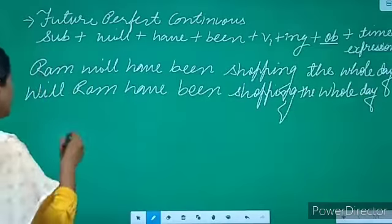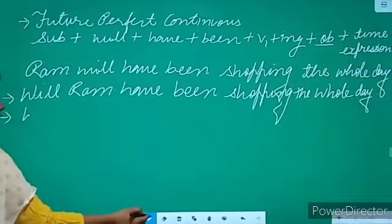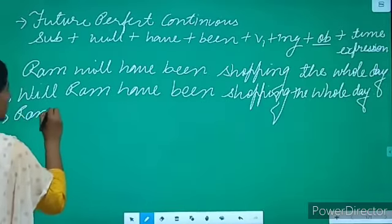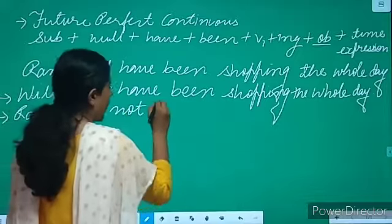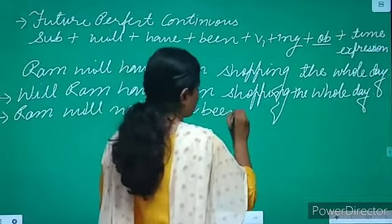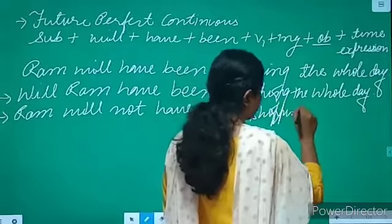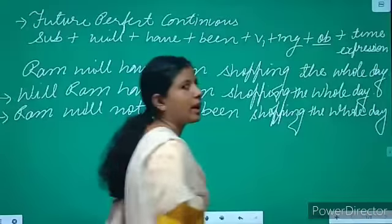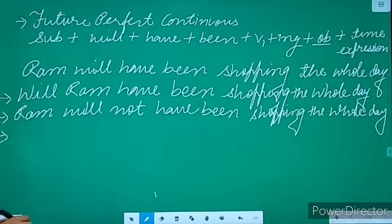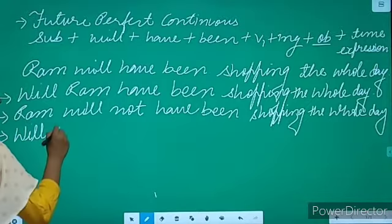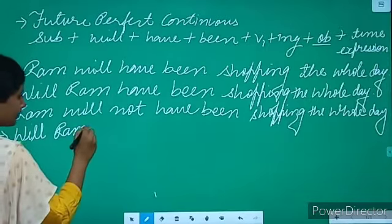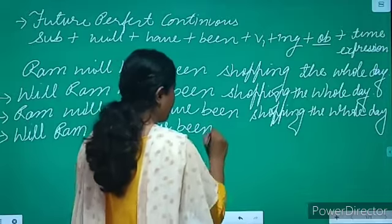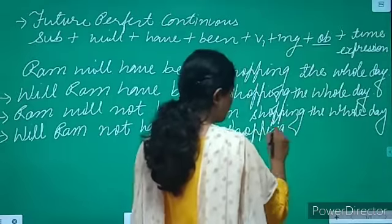Now to change it into negative, you just need to add 'not' after the helping verb: 'Ram will not have been shopping the whole day.' To change it into interrogative negative: 'Will Ram not have been shopping the whole day?' with a question mark.